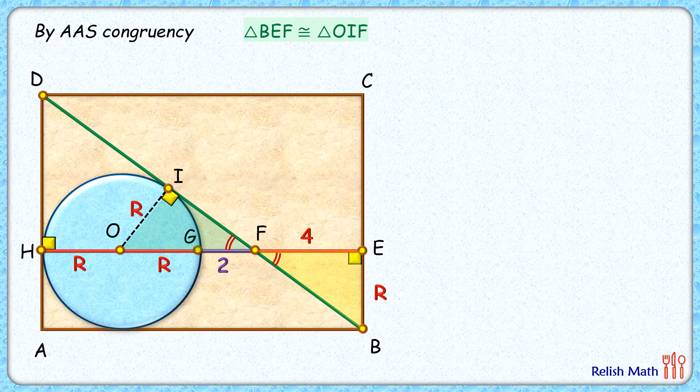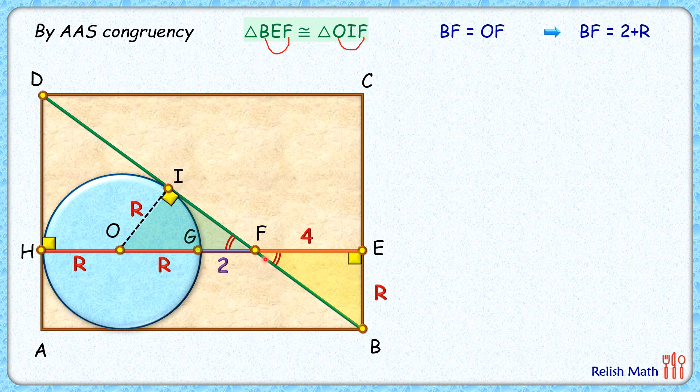As the triangles are congruent, thus the corresponding sides will be equal. So we can say BF length is equal to OF length. But OF length, that is nothing but 2 plus r centimeters. So BF is 2 plus r, or this length here is 2 plus r.